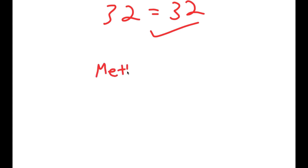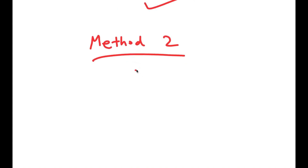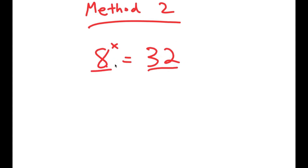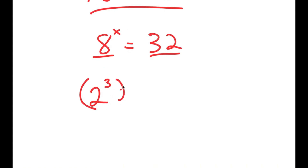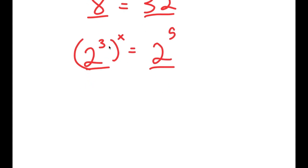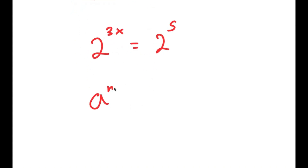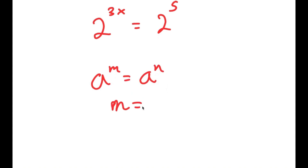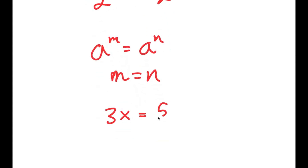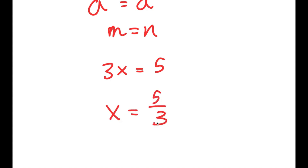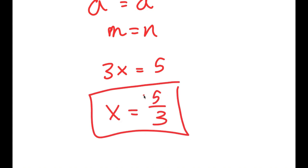I also have a second method of solving this problem. For the second method, we have the same equation: 8 to the power of x is equal to 32, and this is a simpler method. I'm going to rewrite 8 as 2 to the power of 3, and 32 as 2 to the power of 5, rewriting both as the same base. So 2 to the power of 3x equals 2 to the power of 5. Because these two have the same base, the exponents must be equal: 3x equals 5, so x equals 5 over 3.